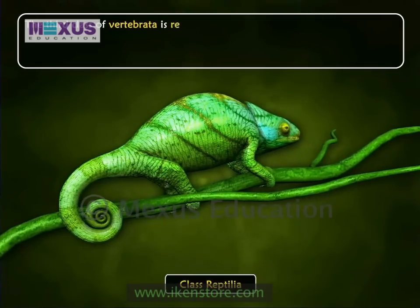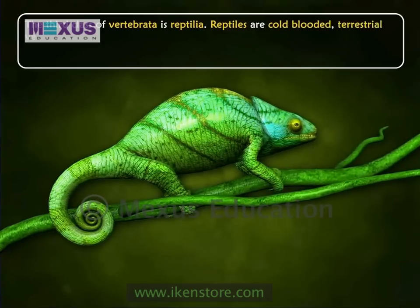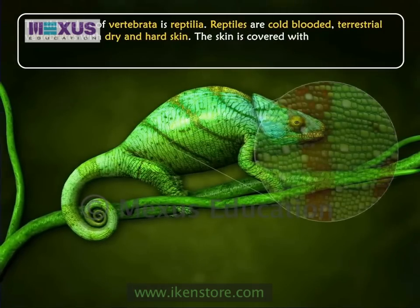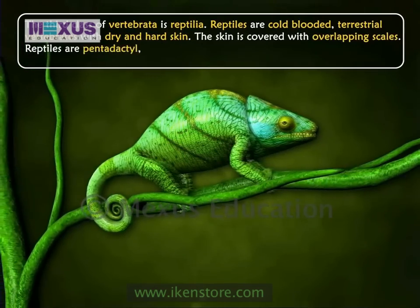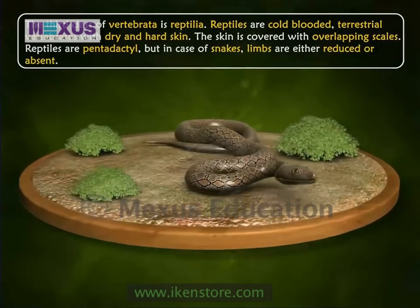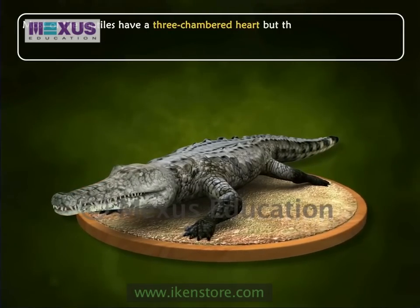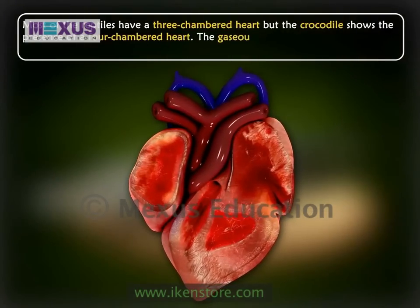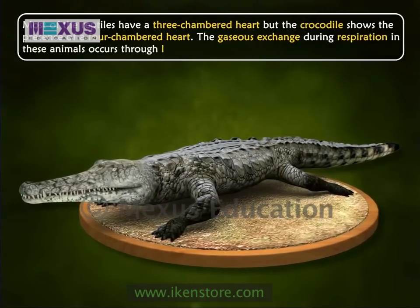The third class of Vertebrata is Reptilia. Reptiles are cold-blooded terrestrial vertebrates with dry and hard skin covered with overlapping scales. Reptiles are pentadactyl, but in the case of snakes, limbs are either reduced or absent. Most reptiles have a three-chambered heart, but the crocodile has a four-chambered heart. Gaseous exchange during respiration occurs through lungs.